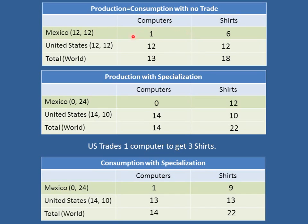Here again is consumption with no trade, and here is production with specialization. Suppose the United States trades one computer to get three shirts — there are other possible trades which make both countries better off, but this is a nice simple one. The United States trades one computer to Mexico, so the United States now has 13 computers. In return for three shirts, the United States used to have 10 shirts and now gets 13. Those extra three shirts come from Mexico, which produced 12 but now only consumes nine.